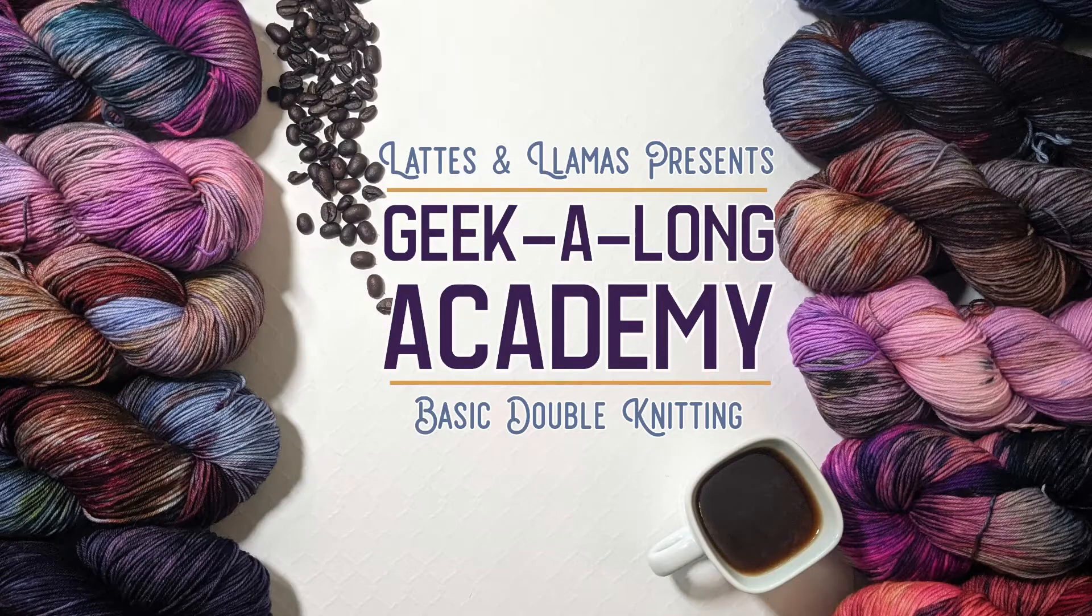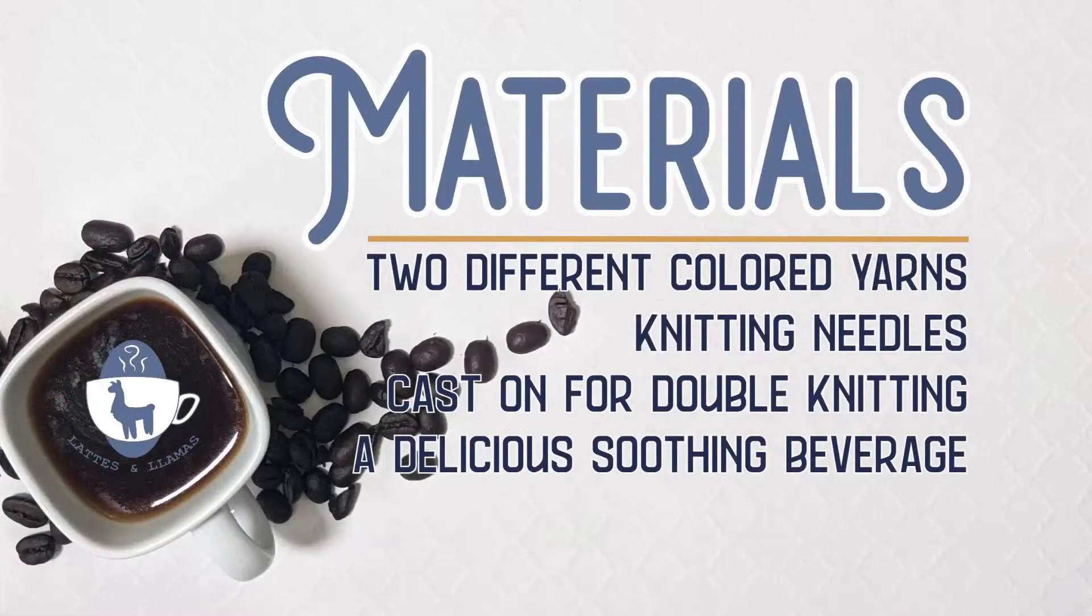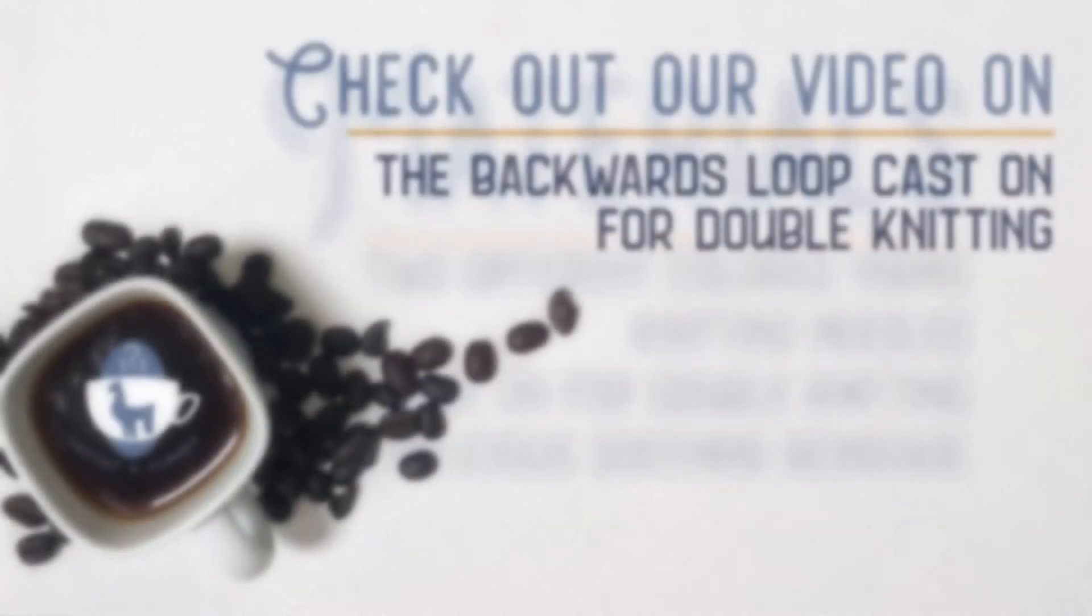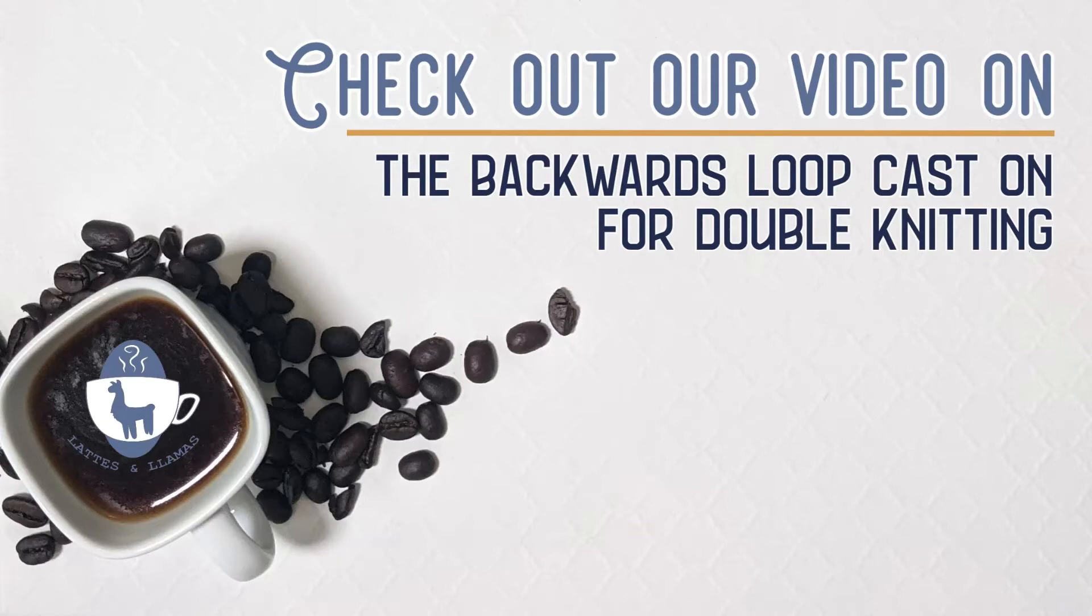Welcome to Lattes and Llamas Presents Basic Double Knitting. For this technique, you'll need two different colored yarns, knitting needles, a delicious soothing beverage, and you'll want to have already cast on for double knitting. Let's get started.